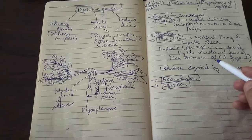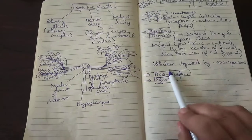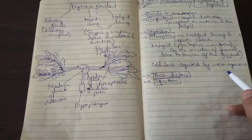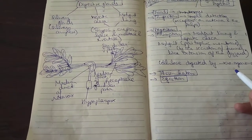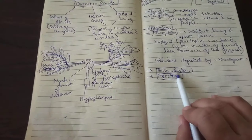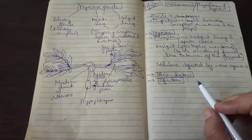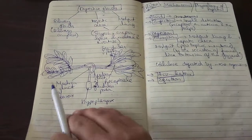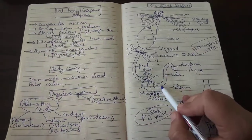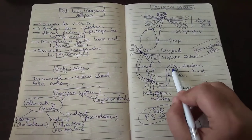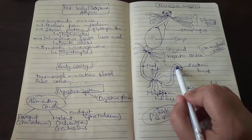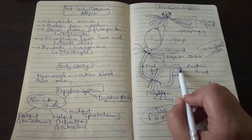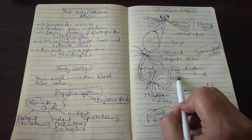Then the digested food moves to the blood from where it is circulated to the rest of the body. The cellulose is digested by the microorganisms that inhabit the hindgut. Acetic acid, which is formed by the breakdown of cellulose, is actively absorbed by the hindgut epithelium. Then comes assimilation — the food which has been absorbed into the blood is converted into body components. Lastly the indigestible matter is stored in the rectum, where rectal papillae help in absorption of water and salts, and the hard feces get accumulated in the rectum and are expelled out through the anus.